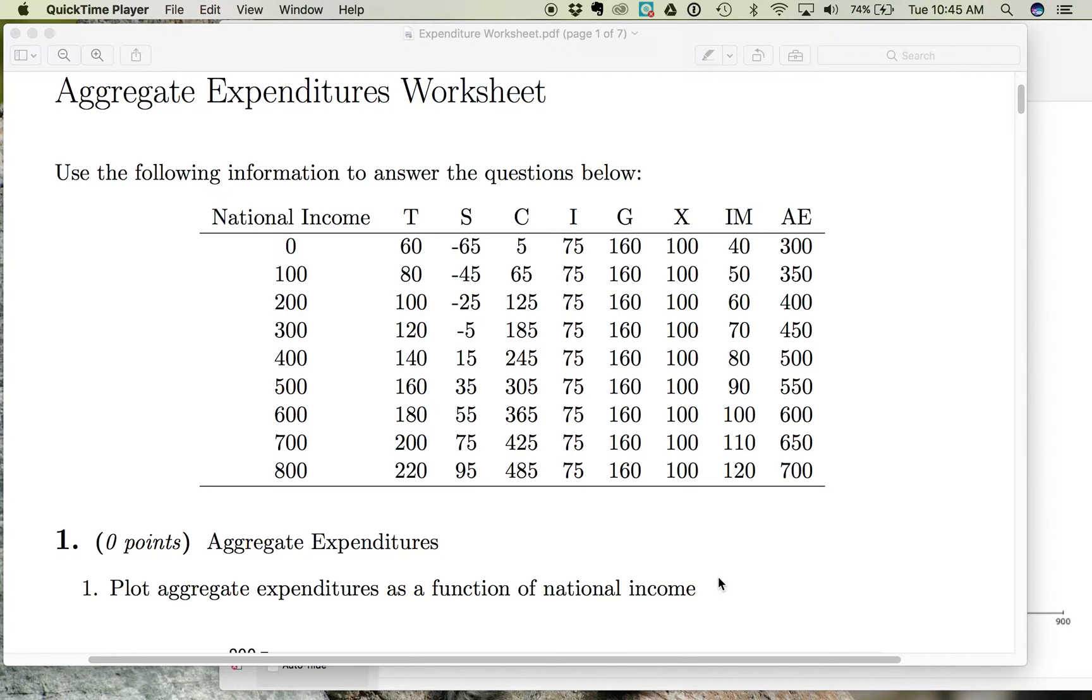We're going to derive aggregate demand by looking at aggregate expenditures, total spending in the economy. First we're going to look at aggregate expenditures as it relates to national income, then we're going to break those aggregate expenditures down into its components, look at what it tells us about the economy, and then we'll end up back at total spending.